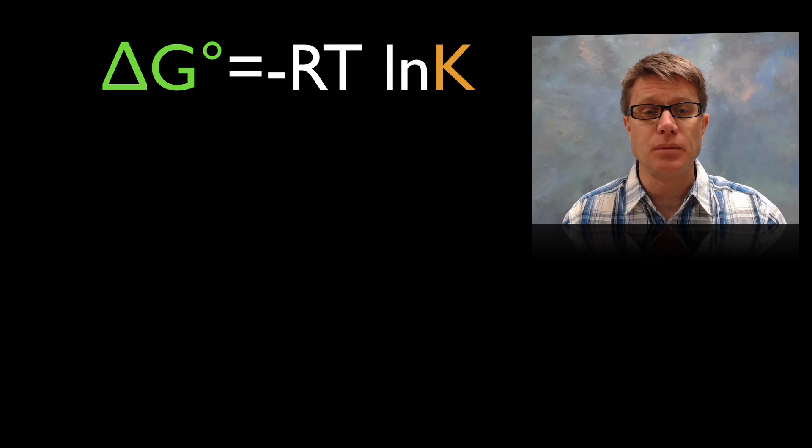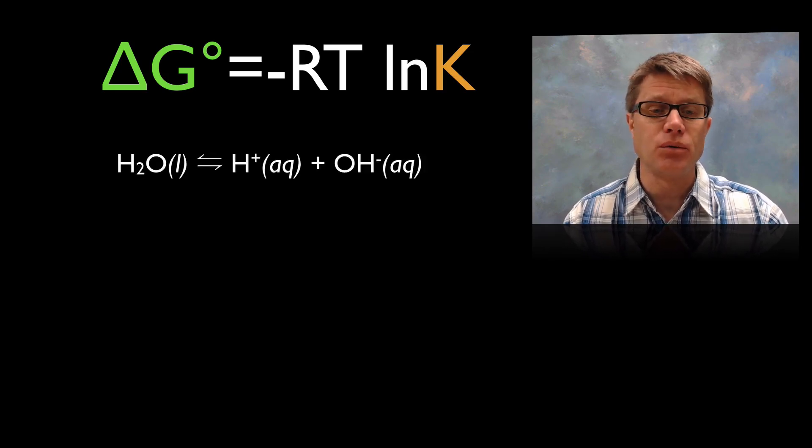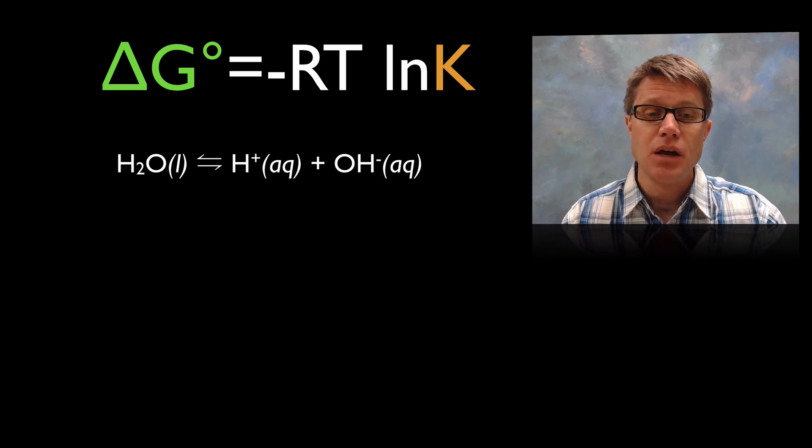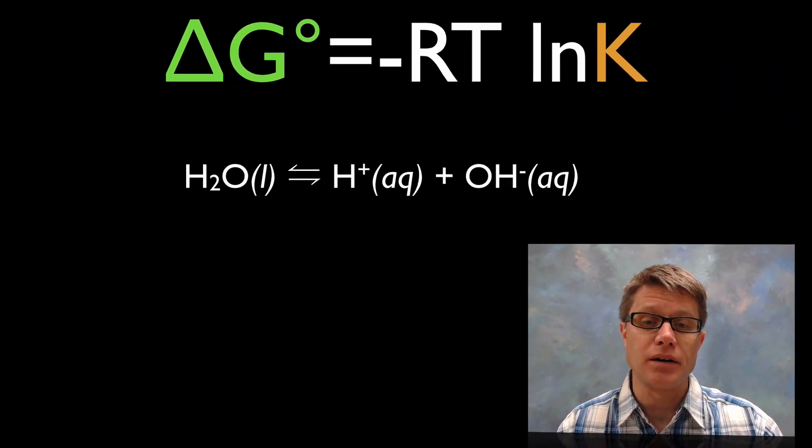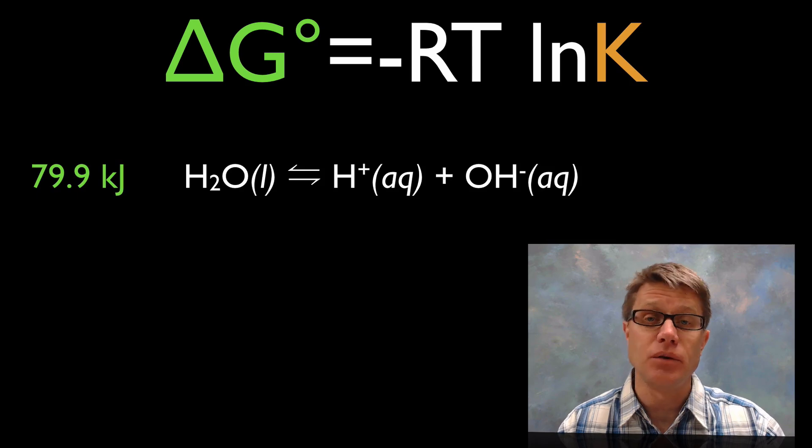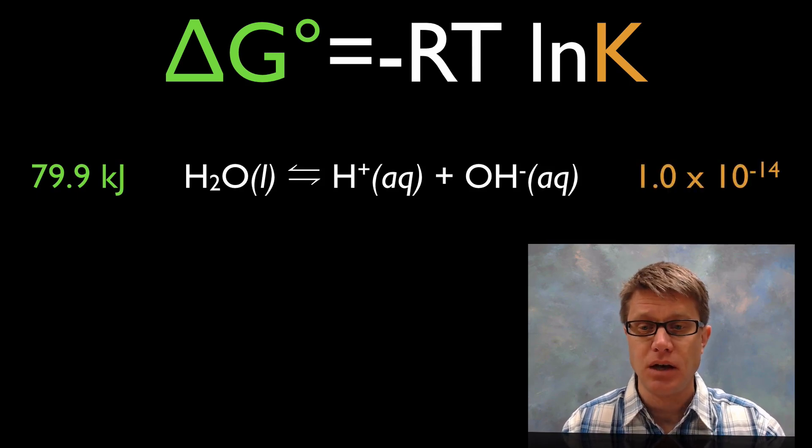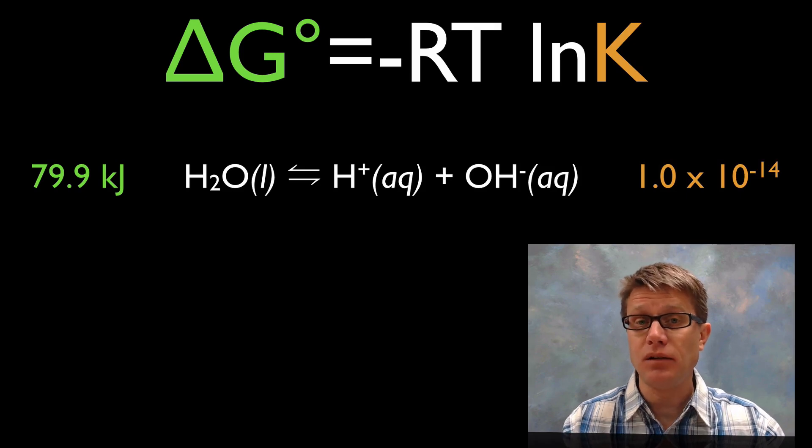And so if we look at this interaction right here between delta G and K, and let's look at a few reactions, reversible reactions. So in this one, the breakdown of water into its different ions, we would call a delta G value, if we measure that, of 79.9 kilojoules. Now let me show you what the K value is. It's going to be a really, really small value.